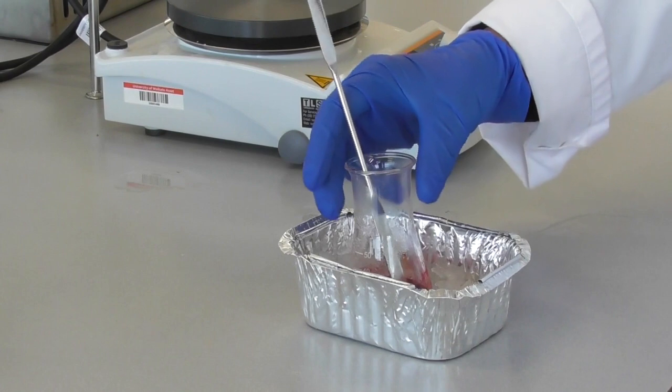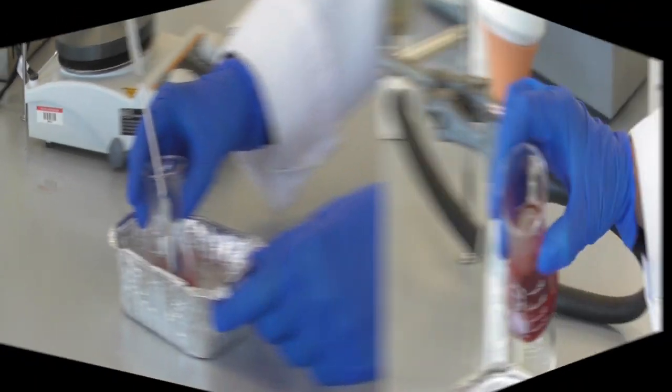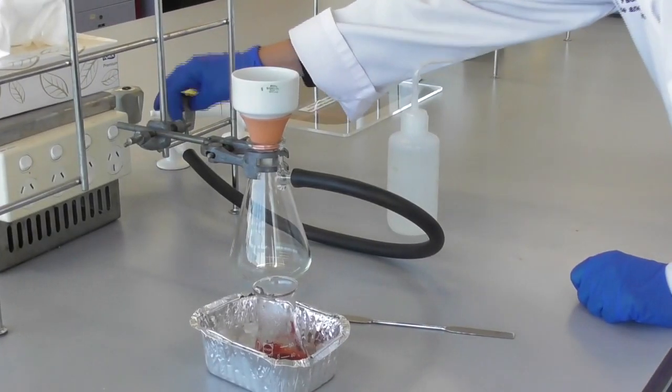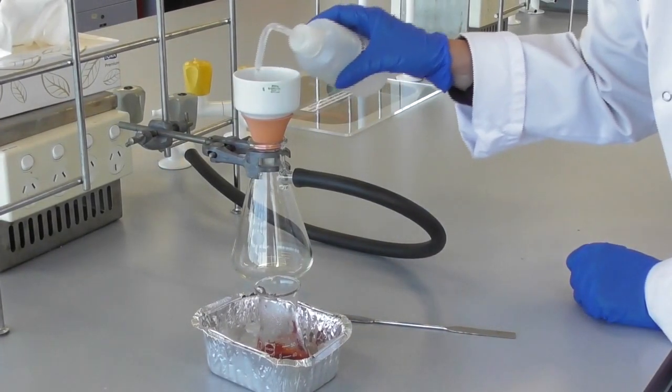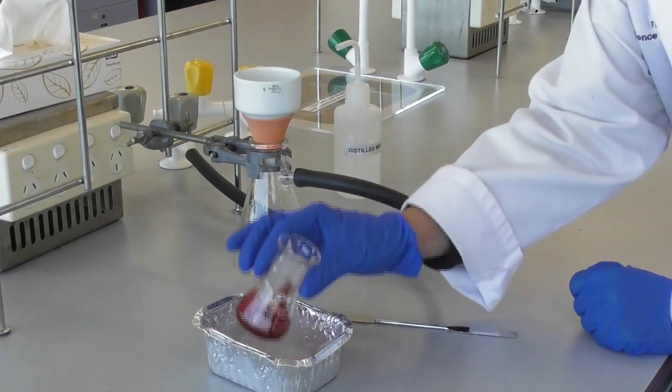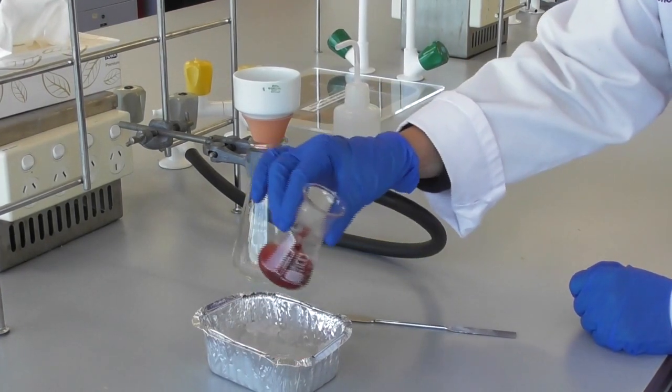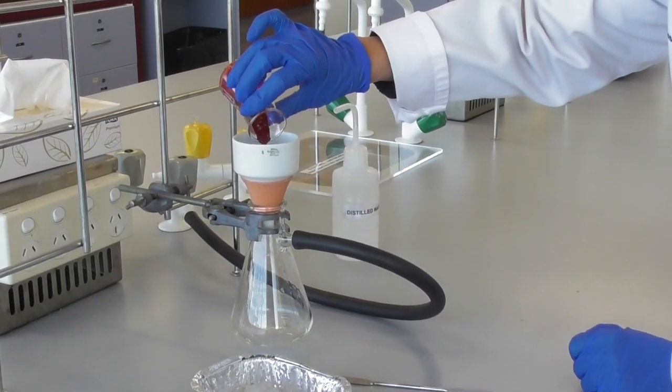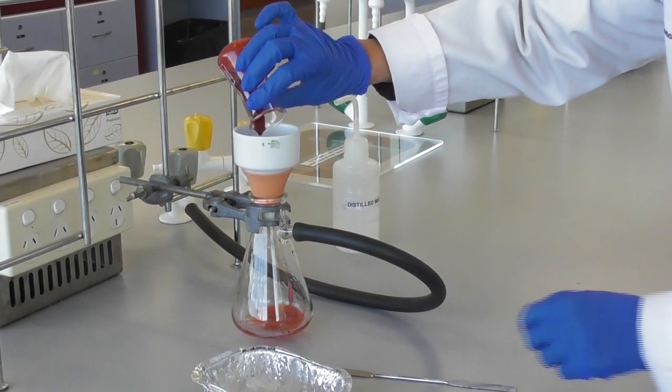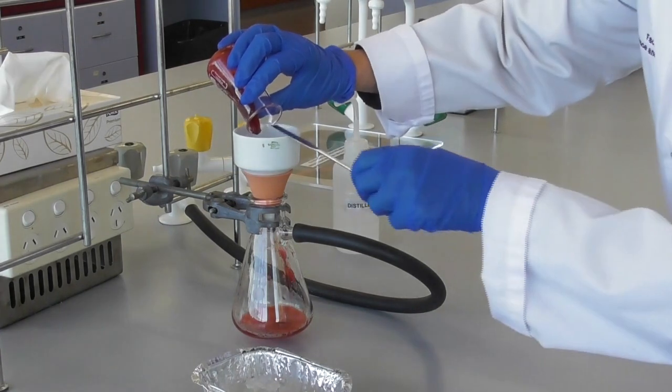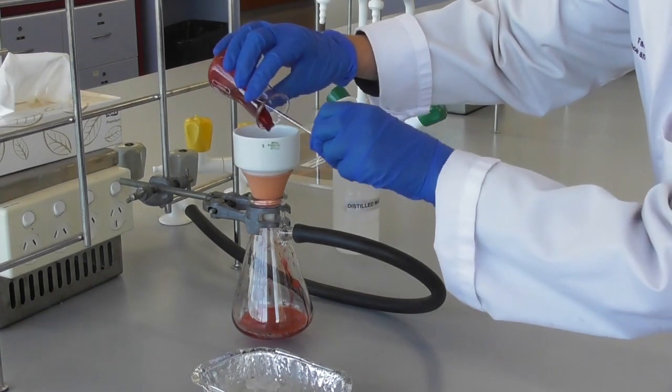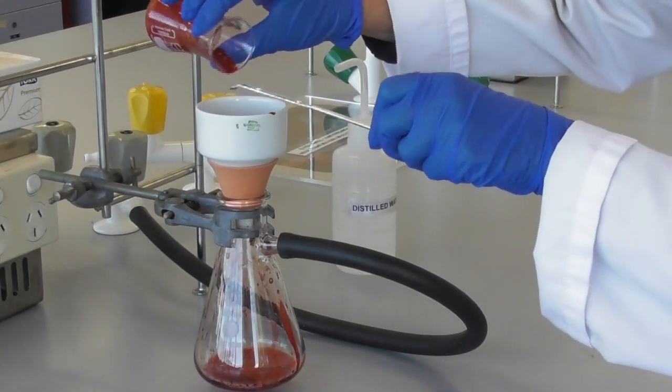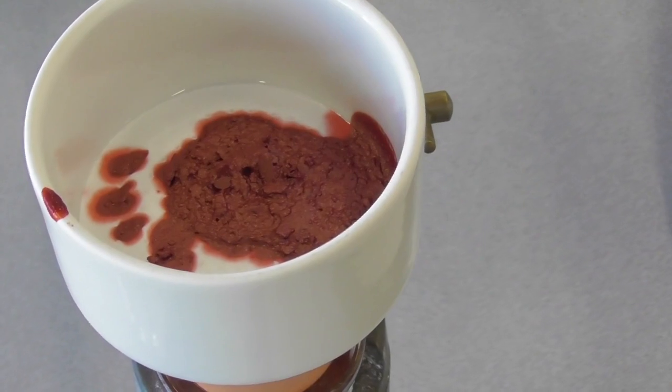To help the mixture cool off we put it in an ice bath. Once it has become thick again and we have precipitate in the solution we can filter our product. We wet the filter paper with distilled water and then pour the thick mixture into the Buchner funnel. To ensure good yield we scrape out some more of the product into the funnel, and then we let it sit on the filter paper with the vacuum running.